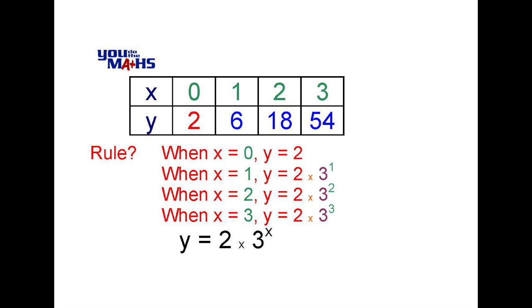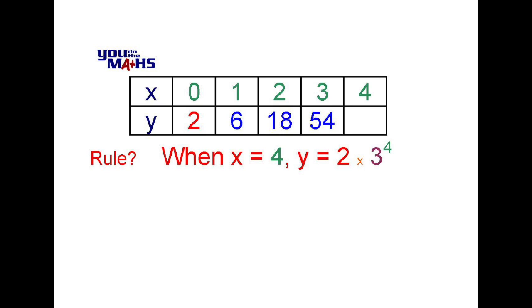We can easily test this rule. If we want to find the next value in our table when x equals 4, we can substitute x equals 4 into our rule. That means that we need to calculate 2 multiplied by 3 to the power 4. We do indices first, 3 to the 4 is 81, and if we multiply that by 2 we get 162.